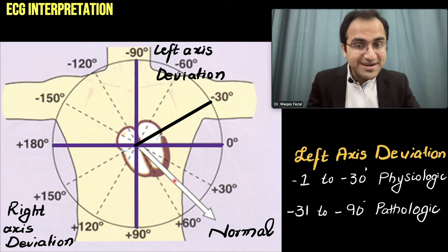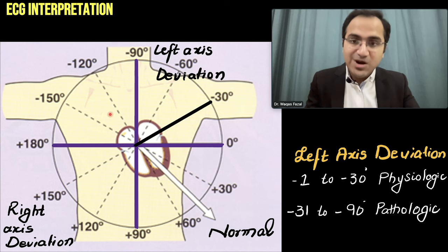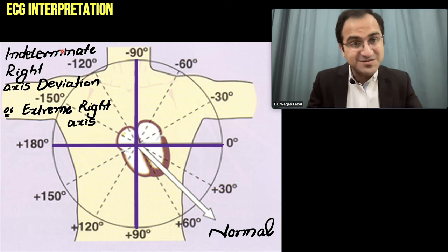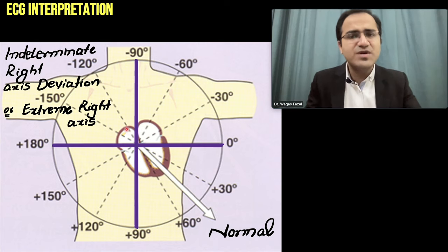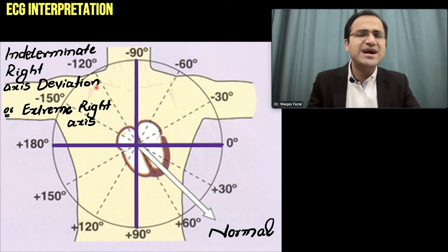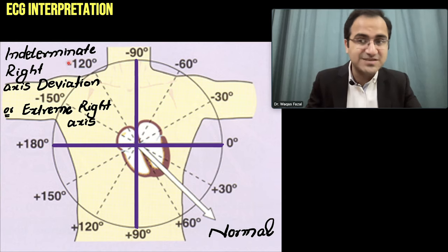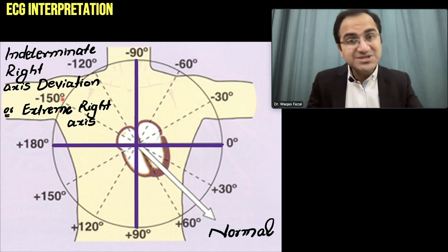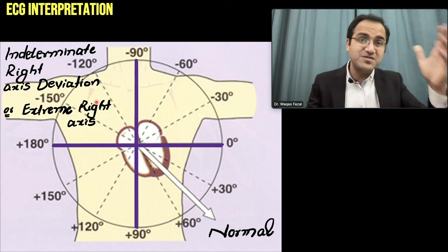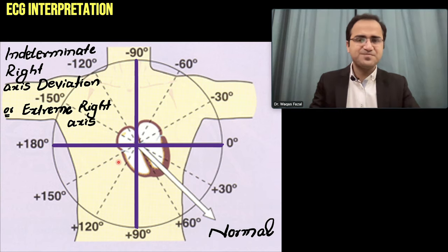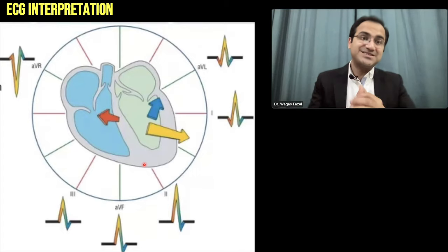If this vector totally deviates into the opposite quadrant, that is called indeterminate axis deviation. It is rare to have the vector there; it is more common to find the vector in the right or left side. Indeterminate axis deviation is also called extreme right axis deviation. You can see this type of deviation when the patient has developed severe ventricular tachycardia, but right and left axis deviations are more common.